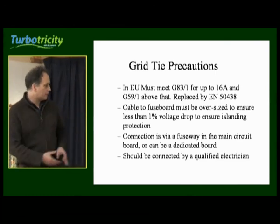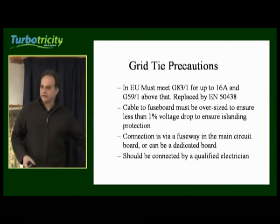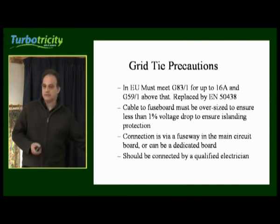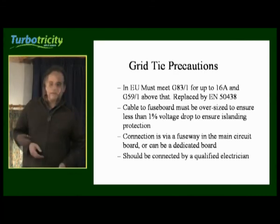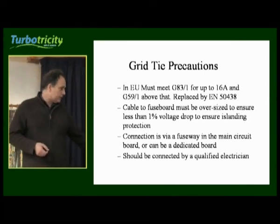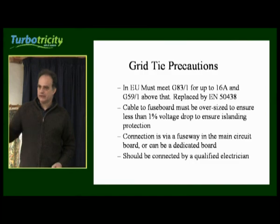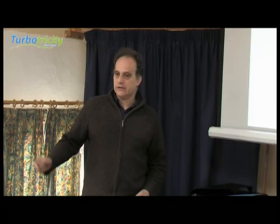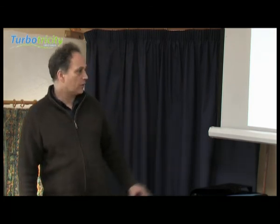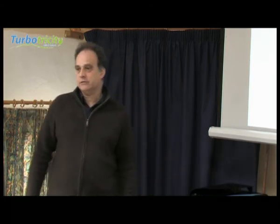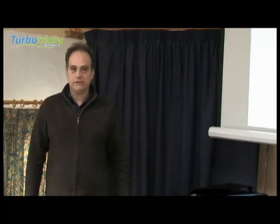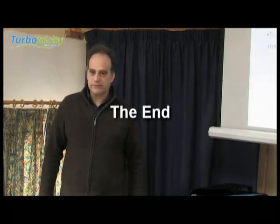The cable between the inverter and the fuse board must be sized such that there's no more than a 1% voltage drop across that cable — which is easily met provided it's in the same room. Normally you connect this quite simply into a fuseway in the consumer unit, putting in another MCB and connecting it in there. The electricity then seamlessly goes up or down the wire, either into the household supply or back out into the grid according to whether it's needed. All of that connection work has to be done by a registered, qualified electrician — the utility is going to insist on that for safety reasons.